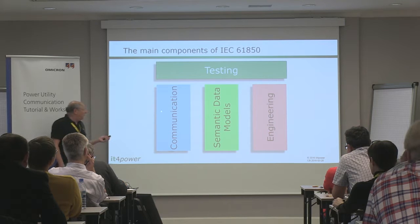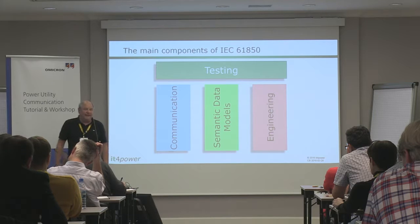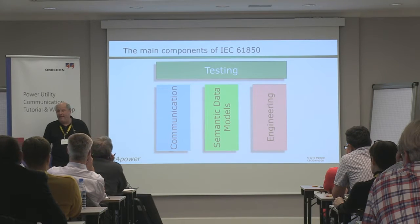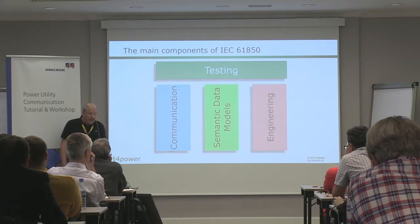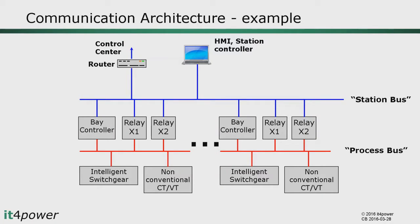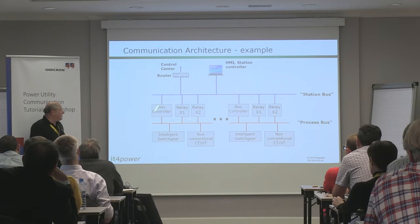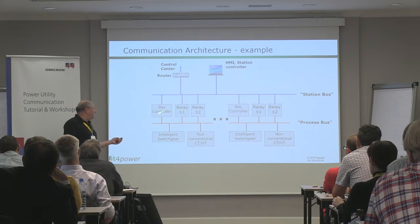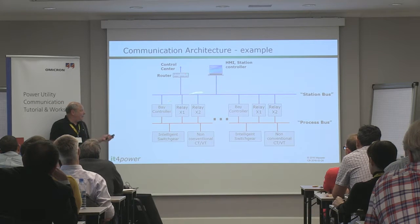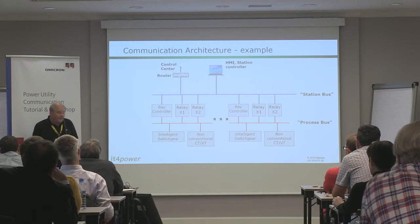Let's take a closer look at these three elements. Starting with communication, here is a typical communication architecture as supported by 61850 in a substation. At the station level we have HMIs, station controllers, and gateways or routers that interface to the control center. A station bus connects these station-level devices with bay-level devices — protection devices and bay controllers — and also supports communication between bay-level devices.